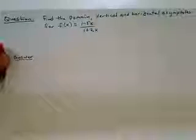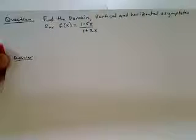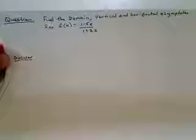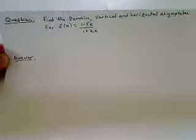The question says to find the domain, vertical and horizontal asymptotes for f(x) equal to (1 minus 5x) in the numerator divided by (1 plus 2x) in the denominator.